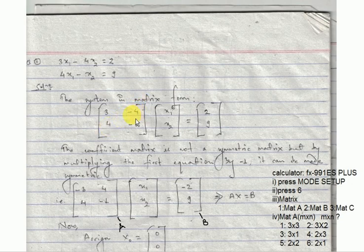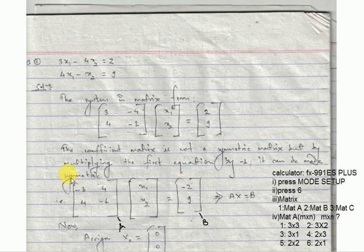The matrix is positive. However, the coefficient matrix is not symmetric. By multiplying using a specific method, it can be made symmetric. In the equation, we can make it approximate such that the summation SK-F equals 4.